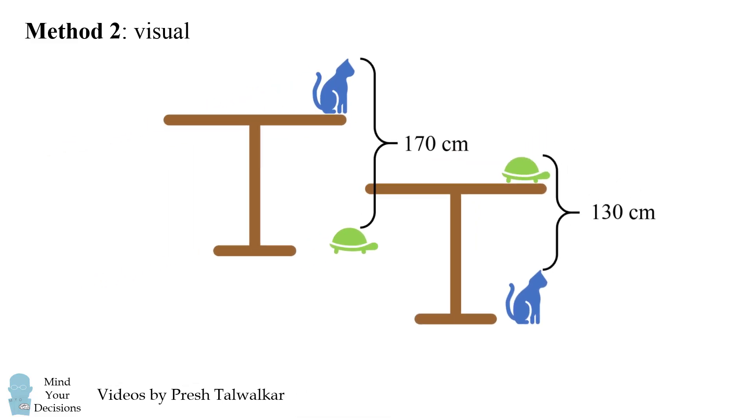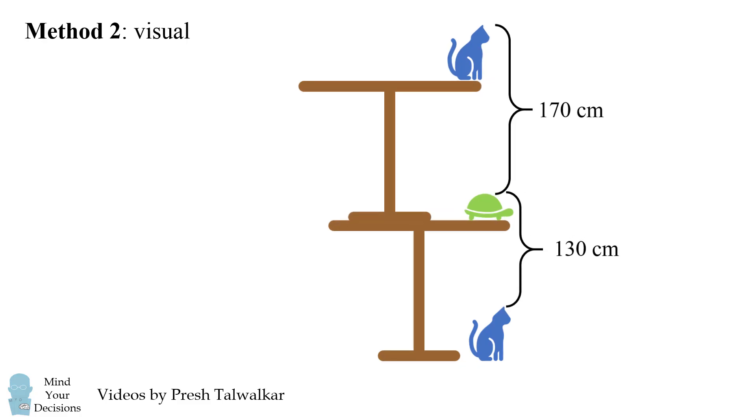Imagine stacking these two pictures on top of each other. Now, notice the height from the top of the cat at the bottom to the top of the cat at the top is equal to 130 plus 170, which is 300.